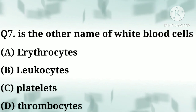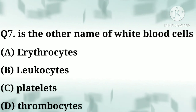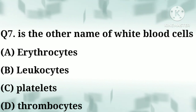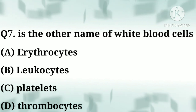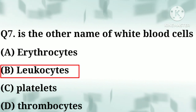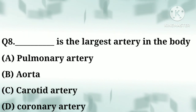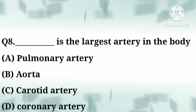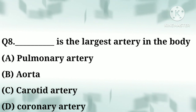Question number seven: blank is the other name of white blood cells (WBC) — option A: erythrocytes, option B: leukocytes, option C: platelets, option D: thrombocytes. Correct answer: option B, leukocytes. Question number eight: blank is the largest artery in the body.